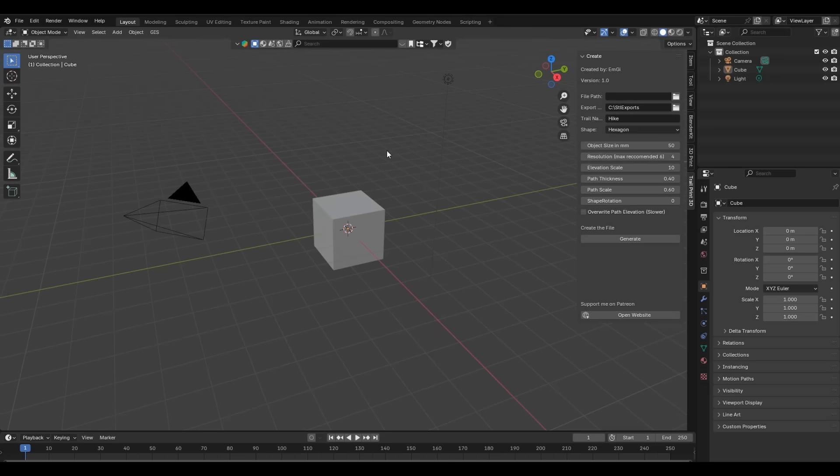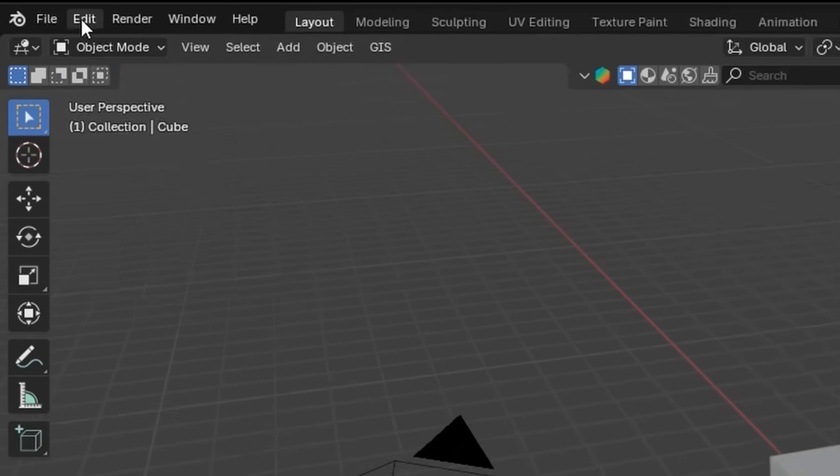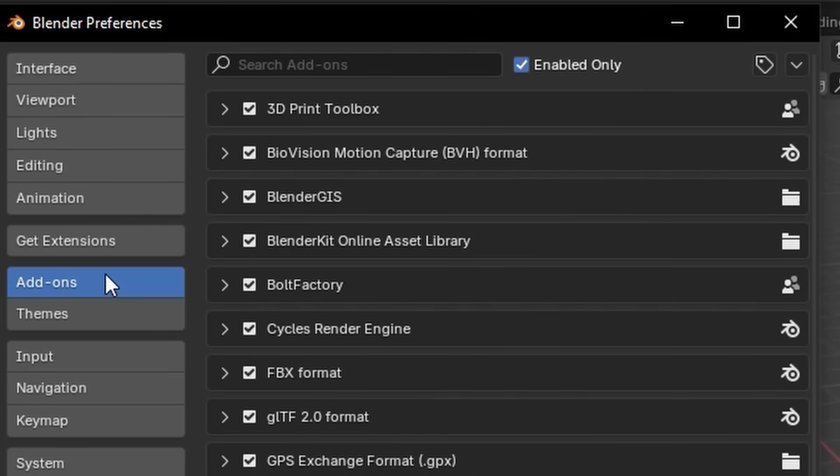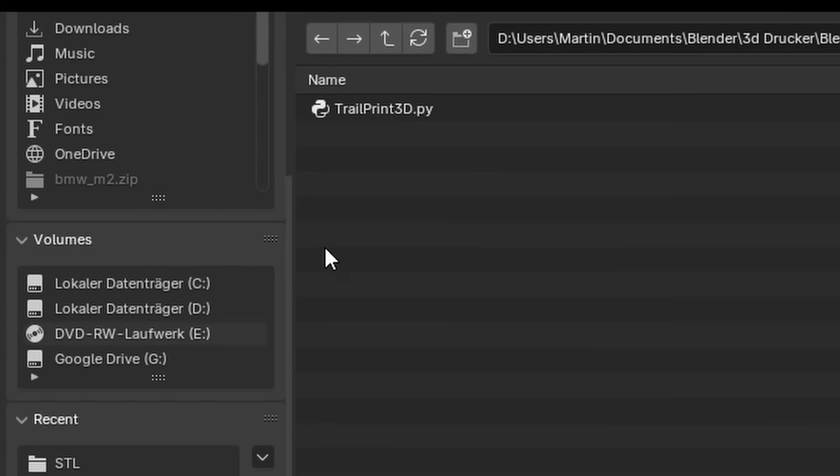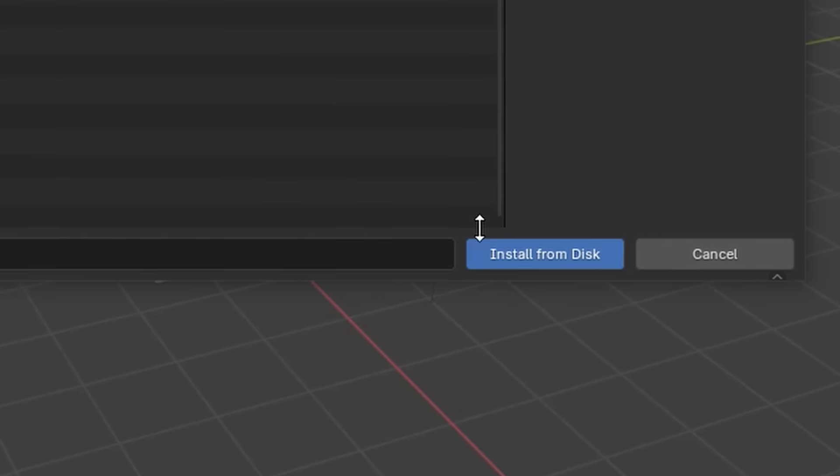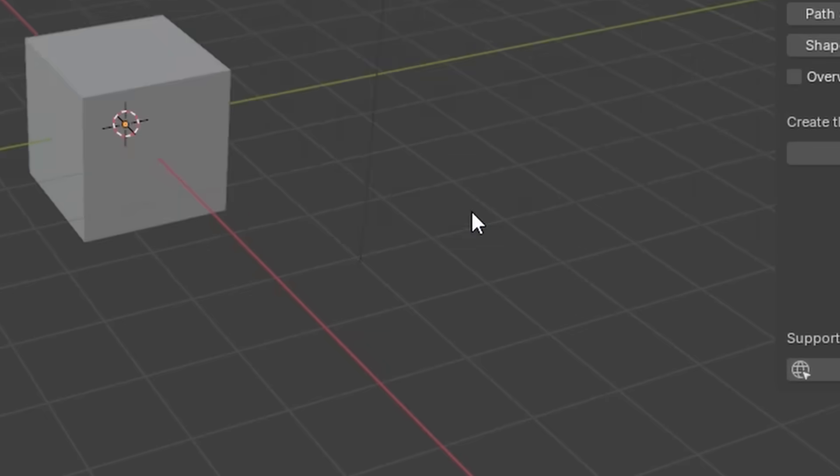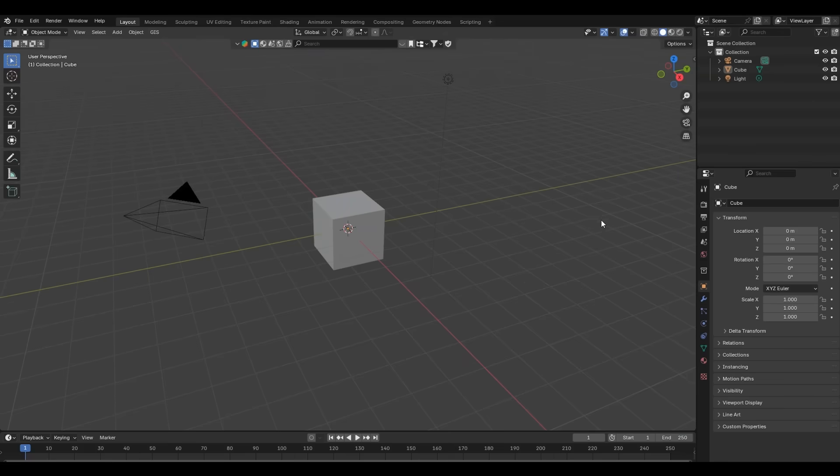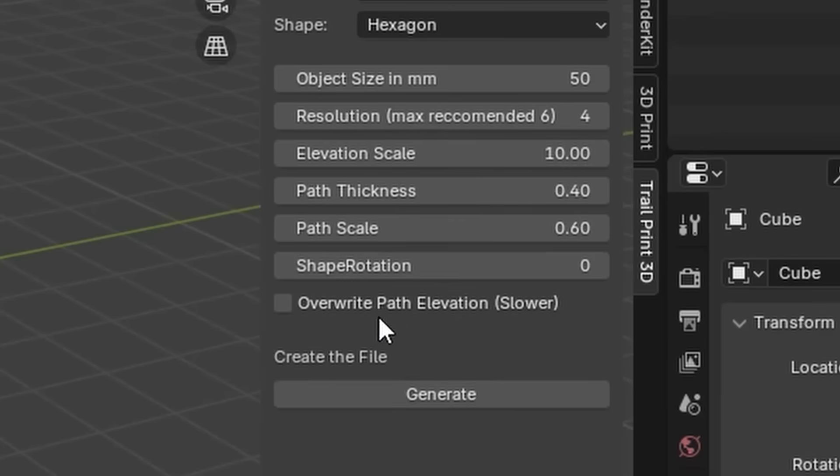To install the add-on you need the most recent Blender version. Then go to Edit and then Preferences. A new window will open. Go to the Add-ons tab. Now click the tiny arrow and press Install from Disk. Select the Trail Print 3D file you downloaded from the video description and confirm. Now you can close the popup window. And if your sidebar isn't showing, press N. And if everything worked you should see the Trail Print 3D tab here.